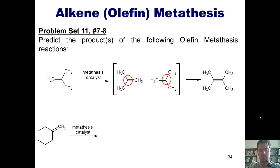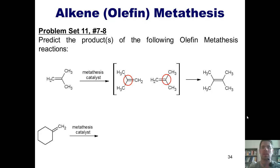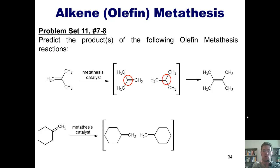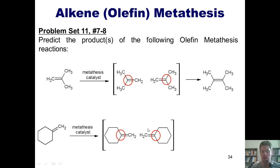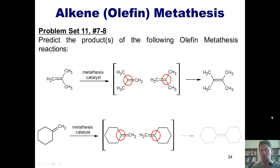Here's our second example. Once again, I draw two molecules of the starting material facing each other. I circle my two internal carbons and remember that this reaction forms a carbon-carbon double bond between those two. The two external carbons — the two CH2s — will once again be double bonded to each other and released as ethylene gas, ultimately giving rise to this type of product here.